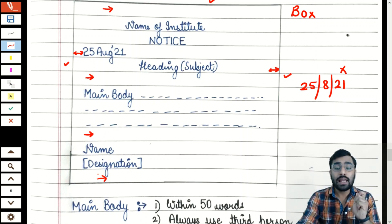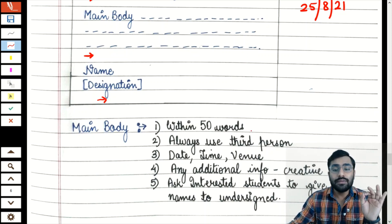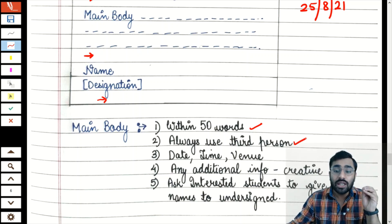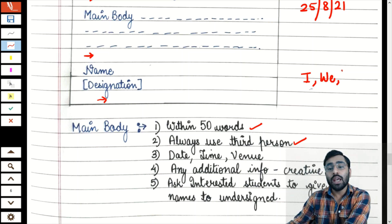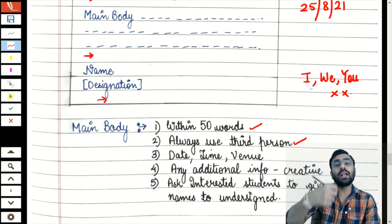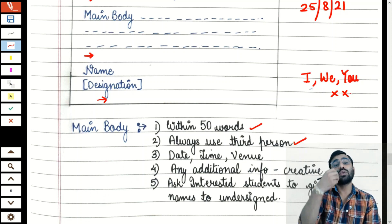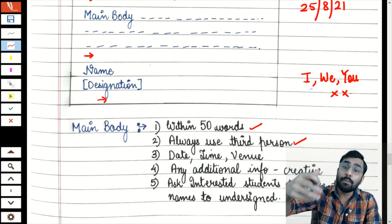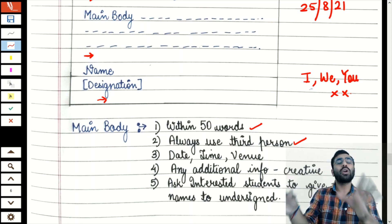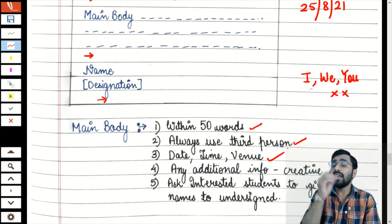Now regarding the main body — there are 5 important points. First: the notice should be within 50 words; it is not very long. For class 12 it is 3 marks, so even if subjective comes, don't write more than 50 words. Second: always use third person — you cannot use I, we, or you. For example, instead of 'We are organizing a blood donation camp,' write 'The school is organizing a blood donation camp' or 'A blood donation camp is being organized in the school.' Third: mention all important details about the event — day, time, venue.